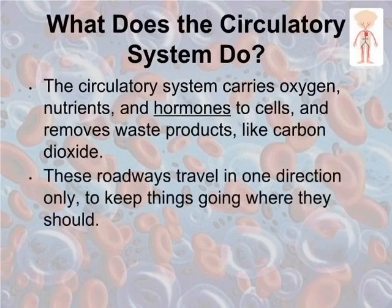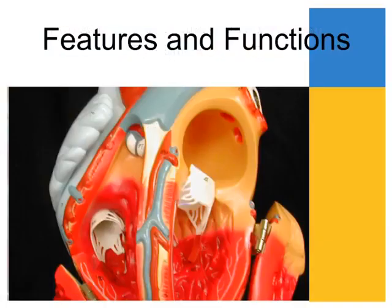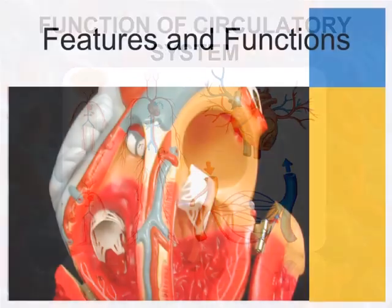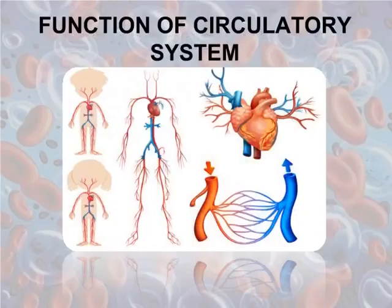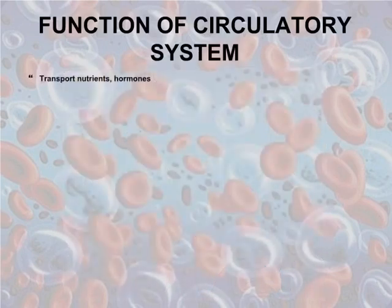These roadways travel in one direction only, to keep things going where they should. Features and functions of the circulatory system — let's find out the functions of the cardiovascular system: transport nutrients and hormones, remove waste products, and gaseous exchange.